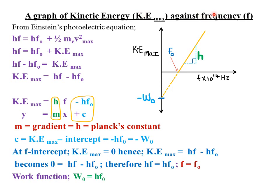Next, we analyze a graph of maximum kinetic energy KE max of the emitted photoelectrons against the frequency f of the incident radiation. From the table in our first slide, it was clearly evident that an increase in the frequency of incident radiation leads to an increase in the maximum kinetic energy of the emitted photoelectrons. This direct proportionality relationship is why the graph is a straight line.